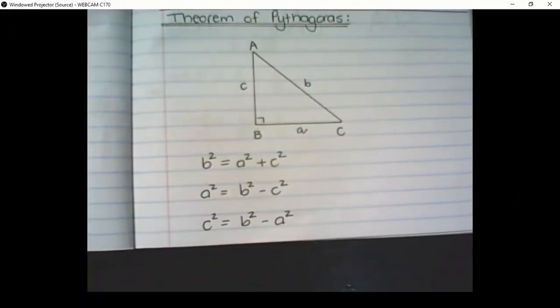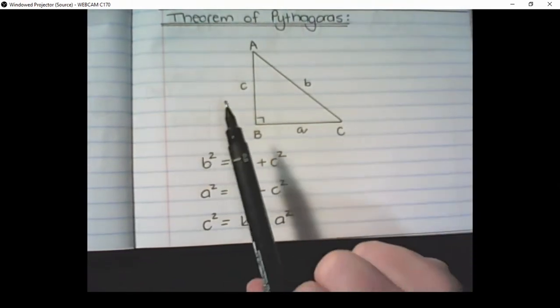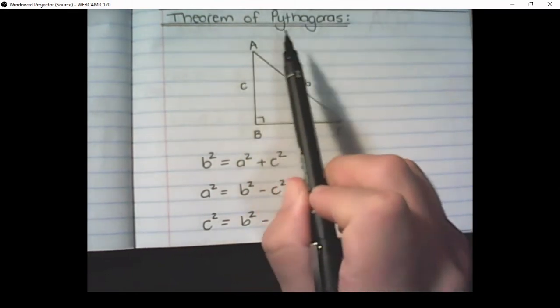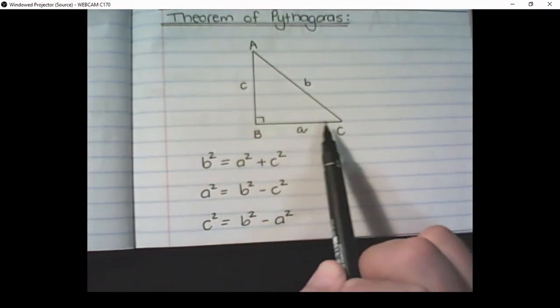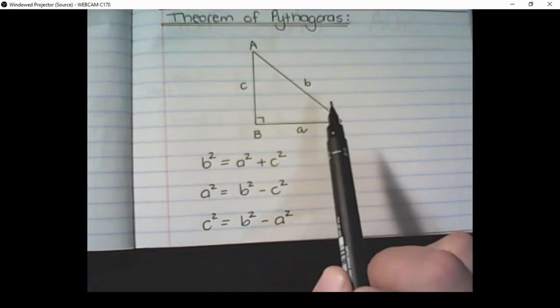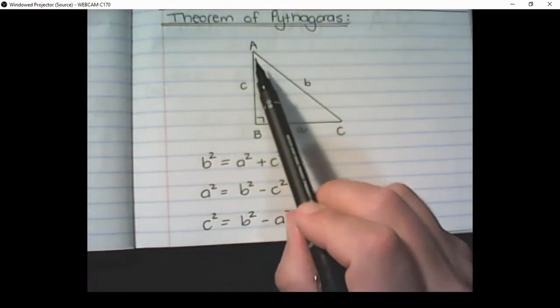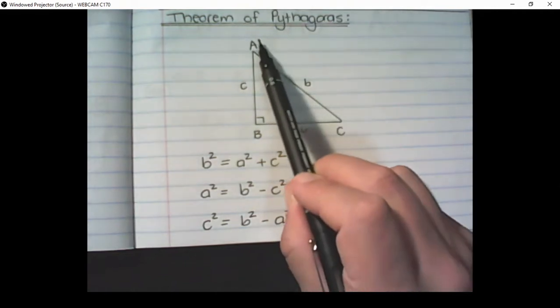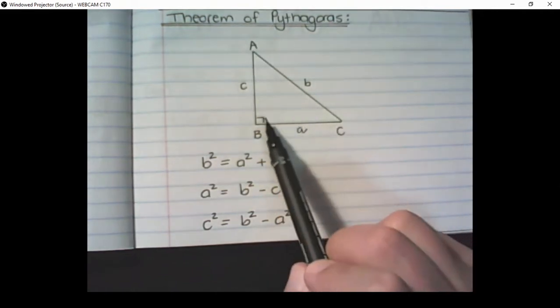Before we go on to trigonometric theory, let's just revise the theorem of Pythagoras which was introduced to you in grade 8. Now the theorem of Pythagoras needs a right angled triangle. In this triangle we have angle A, B, and C. And for now the angles would be represented by capital letters.